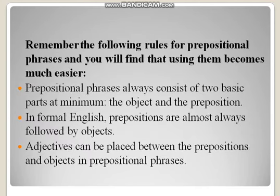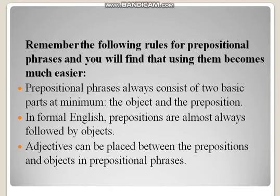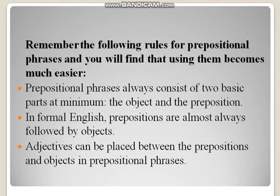Remember the following rules for prepositional phrases and you will find that using them becomes much easier. Certain rules are given, remembering which it would be easy for you to more easily identify a prepositional phrase in a sentence. Prepositional phrases always consist of two basic parts at minimum — the object and the preposition. In formal English, prepositions are almost always followed by objects. Adjectives can be placed between the preposition and the object in prepositional phrases.